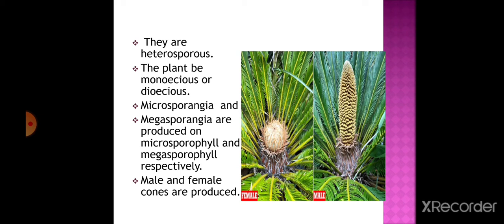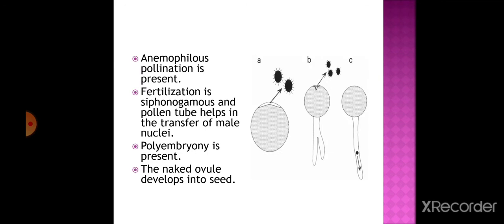Microsporangia are capsules that hold microspores; megasporangia are sporangia which produce only megaspores. Male and female cones are produced. Anemophilous pollination is present - the agent involved is wind. Fertilization is siphonogamous, meaning reproduction takes place through a pollen tube, which helps in the transfer of male nuclei.